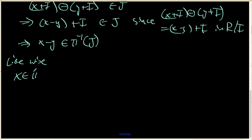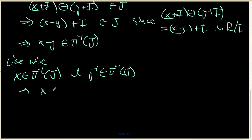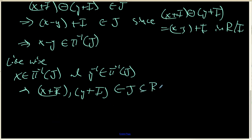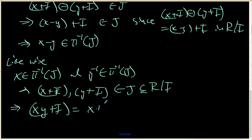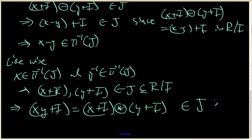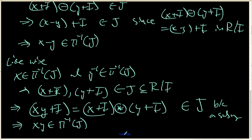Similarly, x inside the pre-image of J and y inside the pre-image of J imply x plus I and y plus I belong to the subring J in R mod I. But that also says that x times y plus I, which equals (x plus I) times (y plus I), has to belong to J because J is a subring. And this statement says that x times y does indeed belong to the pre-image of J.